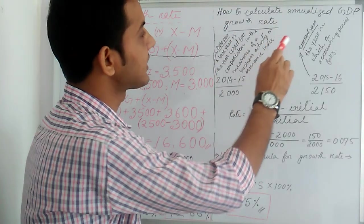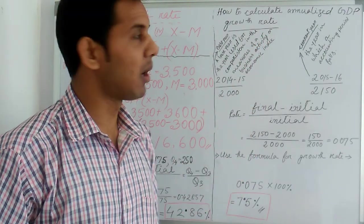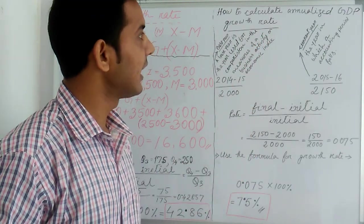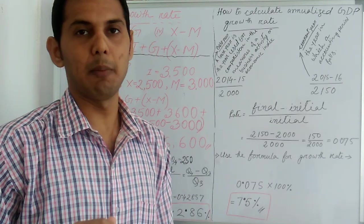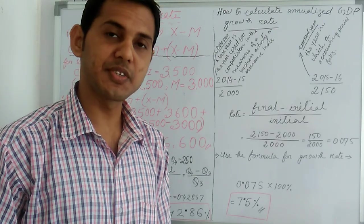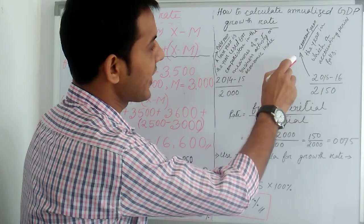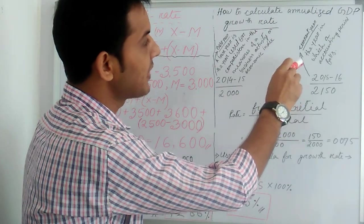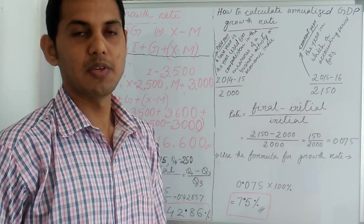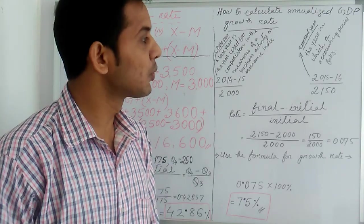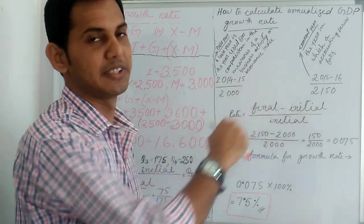Now, how to calculate annualized GDP growth rate? Before knowing about how to calculate annualized GDP growth rate, you should know about what is current year and what is base year. Current year means the year in which an accounting period falls. Suppose we are talking about 2015-16, so this is our current year.